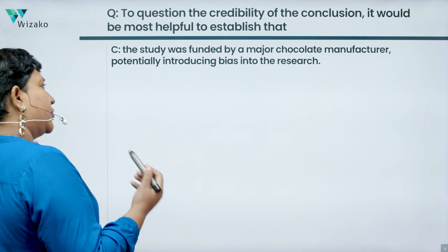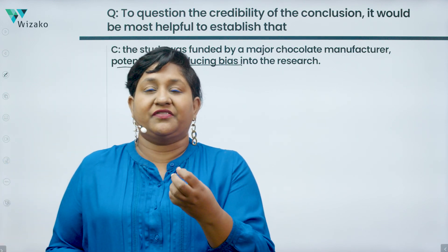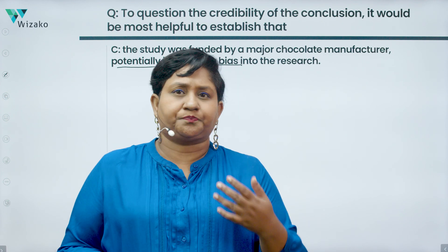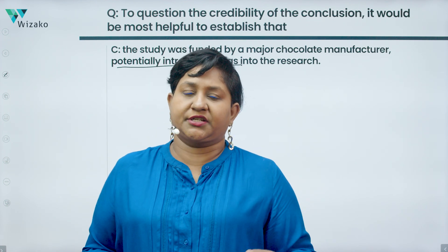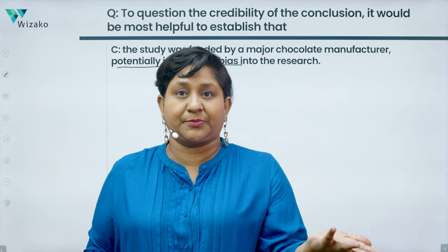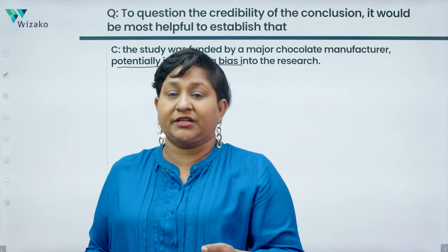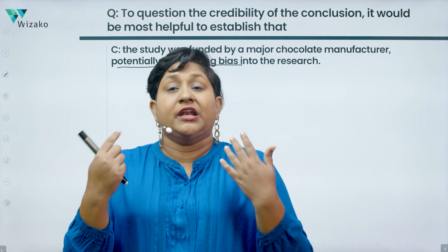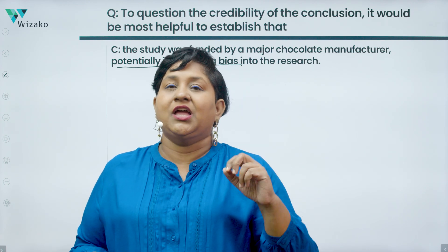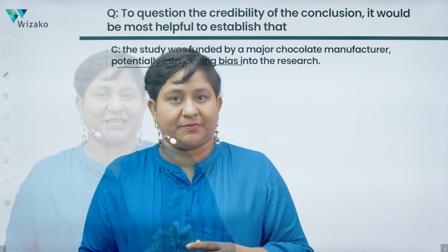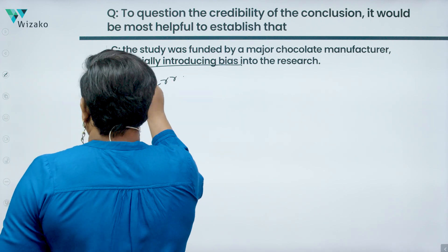Answer C: The study was funded by a major chocolate manufacturer, potentially introducing bias into the research. "Potentially introducing bias" does not mean there actually was bias. Also, you have a quantified result here. Bias-related answer options typically work for qualitative research — like surveys about perceptions — where funding can influence opinions. For example, an influencer paid to promote a product might not truly like it. But when the research is quantifiable, like this study's statistics, bias is less relevant. This answer is irrelevant to our discussion.